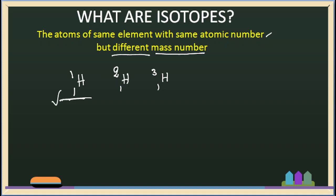Hydrogen-1,2 exists in nature, and Hydrogen-1,3 also exists in nature. The atomic number is 1, so the number of electrons and protons is 1. One electron and one proton are in hydrogen. But the mass number is different.